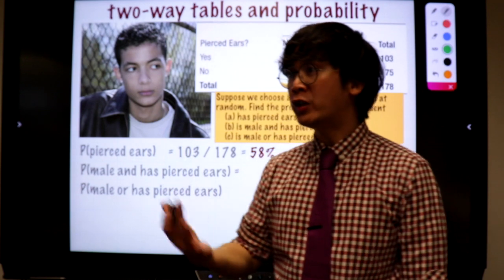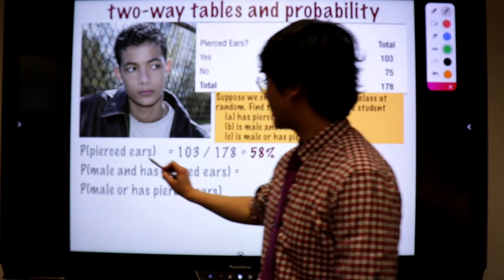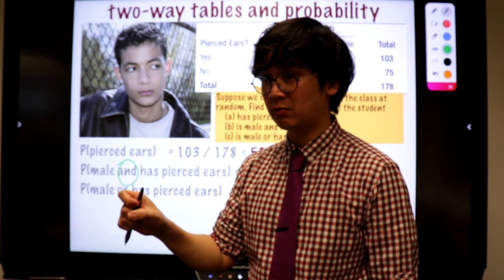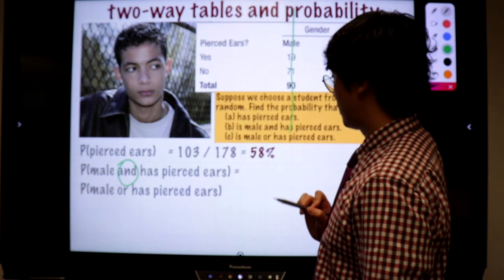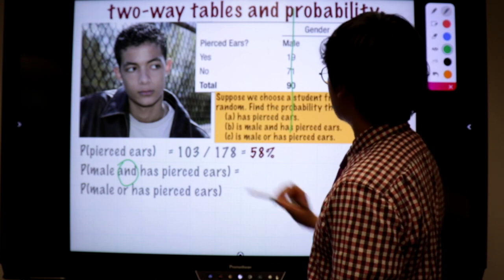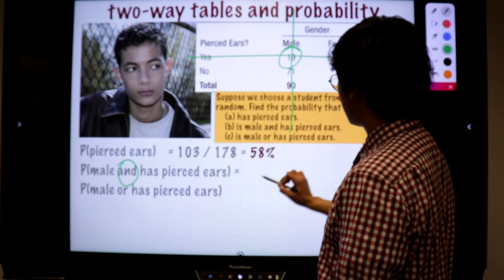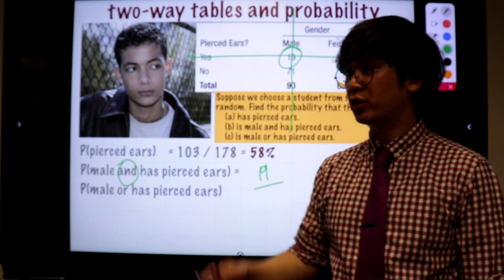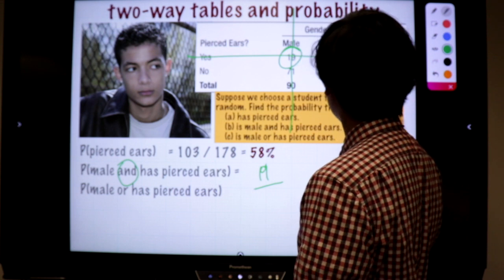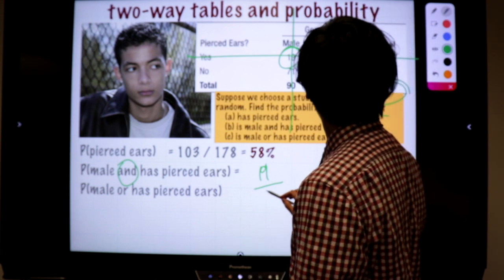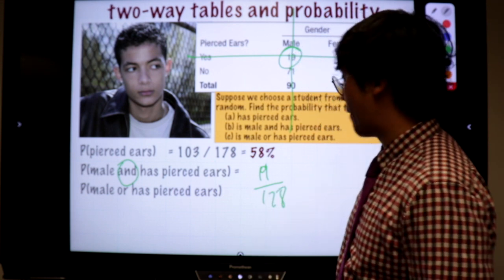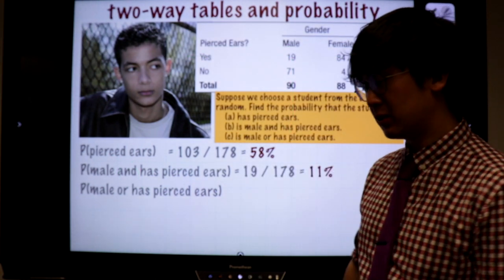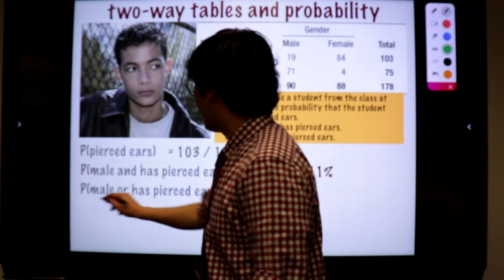Is it a union or intersection? Intersection, which means they need to have both qualities. Male with ear piercing: 19 out of the total — always the total because there's no condition yet, all of them are students — so it's 19 out of 178, which is about 11%. Smaller, obviously, because they need to have both qualities.